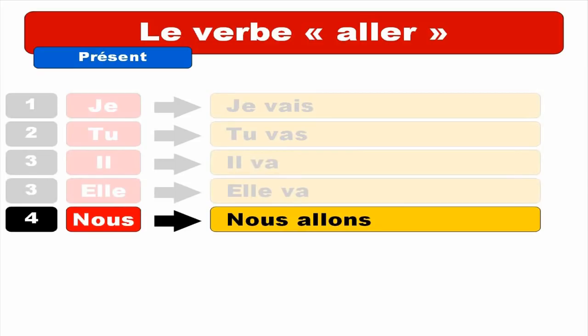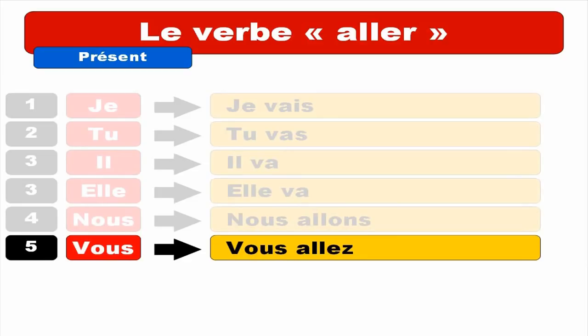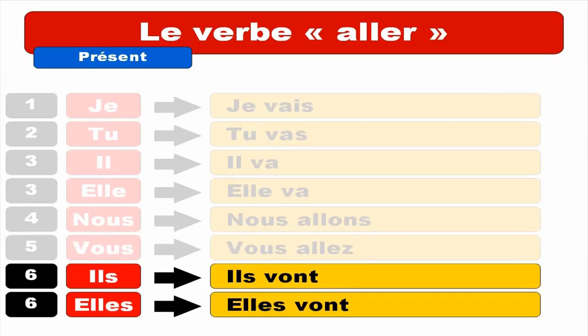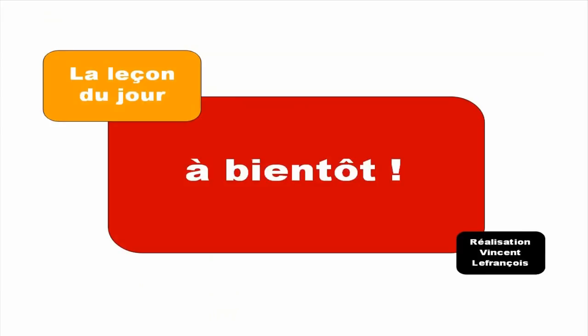VOUS ALLEZ — same thing, the liaison between S and A. VOUS ALLEZ. Repeat. VOUS ALLEZ. ILS VONT. ELLES VONT. Repeat. ILS VONT. ELLES VONT. I do hope everything is clear now. Don't be afraid to watch the video again and again to be sure that you know this verb by heart. Bye-bye.